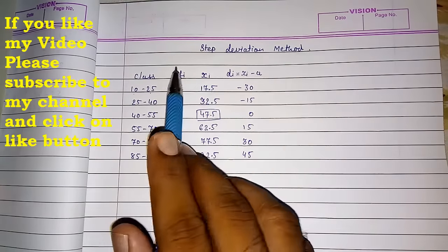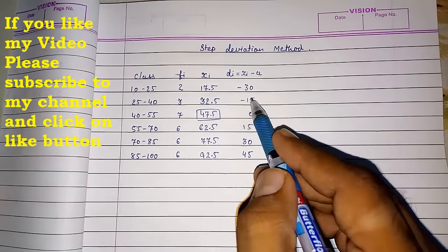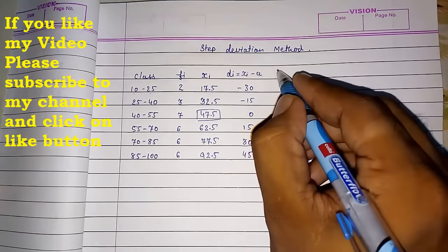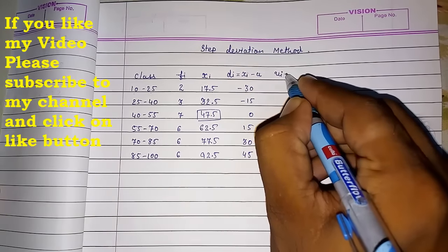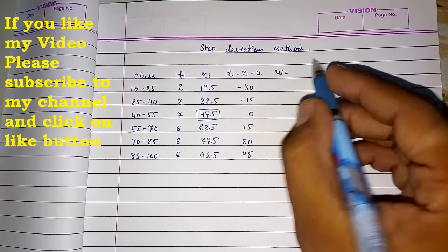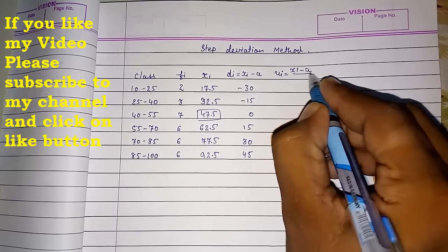Up till now we had used that assume mean method only. Now still we can see these numbers are very big. If still I want to make it small. I have to find out UI. UI means this xi minus a means di upon h you can say or directly you can write xi minus a upon h.